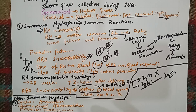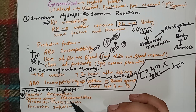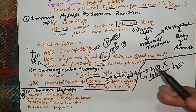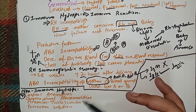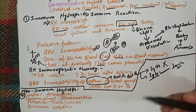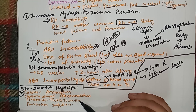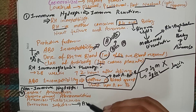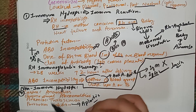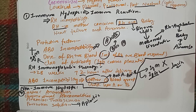Non-immune causes of fetal hydrops include cardiac abnormalities — if there are congenital cardiac abnormalities leading to cardiac failure and circulatory collapse, fetal hydrops can occur. Chromosomal abnormalities such as trisomy 13 and trisomy 18, which are associated with certain cardiac abnormalities, can also cause fetal hydrops. Additionally, anemias such as thalassemia, or parvovirus infection causing aplastic anemia, can lead to circulatory collapse, fluid collection in the body, and fetal hydrops.